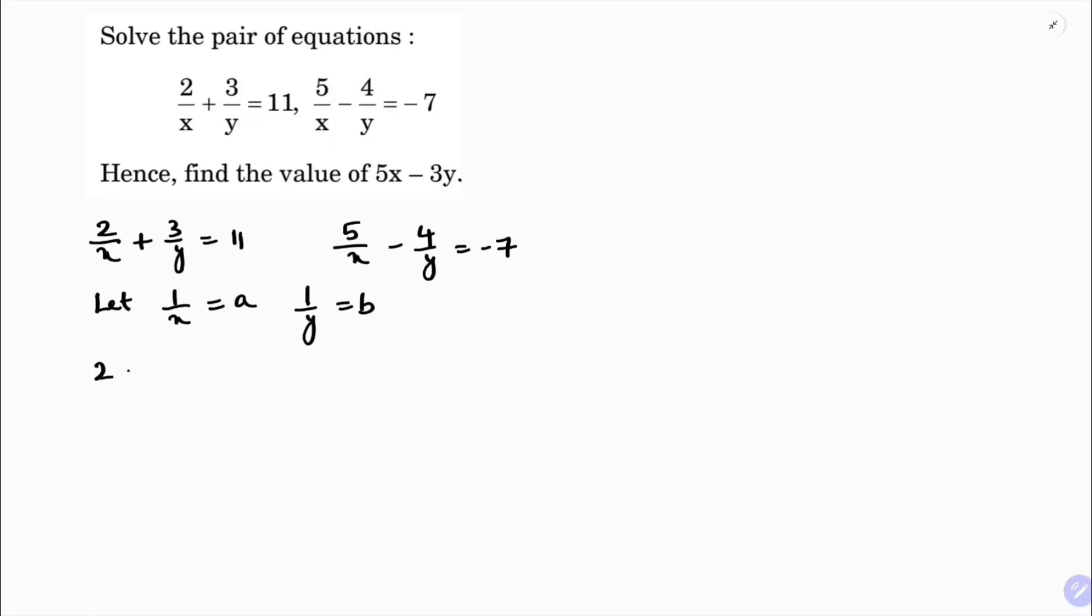The equations will become 2a + 3b = 11. Let me explain in detail how I got this: 2/x + 3/y = 11 can be written as 2 times 1/x plus 3 times 1/y equals 11. Since 1/x value is a and 1/y value is b, we get 2a + 3b = 11. In this way, the equations become 2a + 3b = 11 and 5a - 4b = -7.